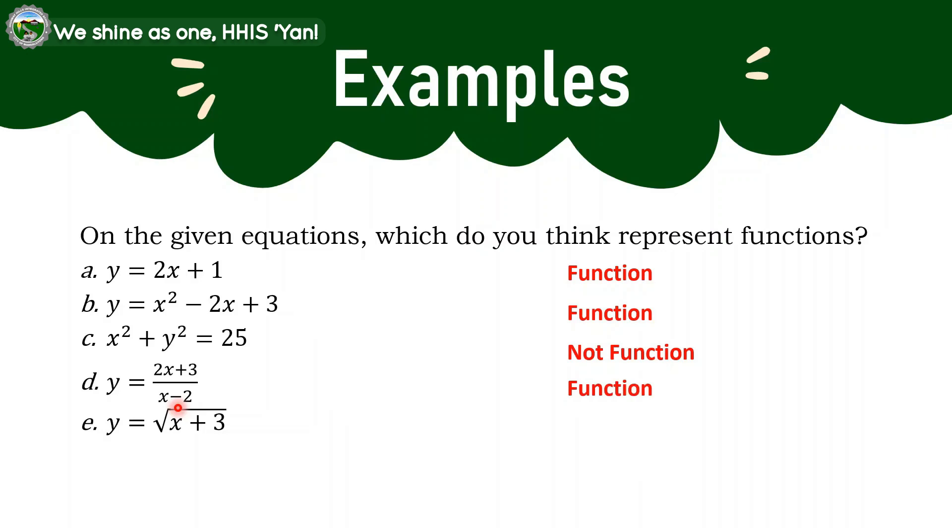In E, we have in here the square root of x plus 3. Let's say x is 1. 1 plus 3, that would be 4. The square root of 4, we have in here 2 roots: 1 positive 2, the other is a negative 2. So since we have two answers in here, it means that the letter E is not a function.